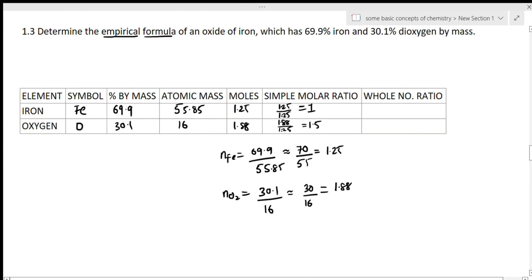So the ratio is 1 to 1.5. Since we need whole numbers, multiply both by 2. This gives 2 to 3. Therefore, Fe₂O₃ is the empirical formula.